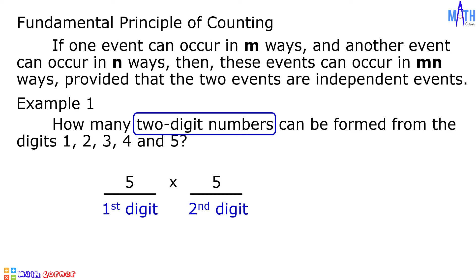Multiplying this, 5 times 5 is equal to 25. There are 25 two-digit numbers that can be formed from the digits 1, 2, 3, 4, and 5.